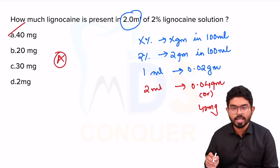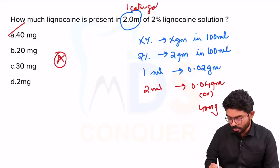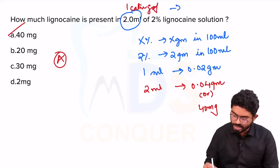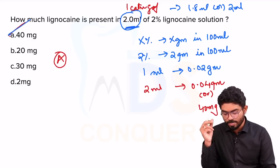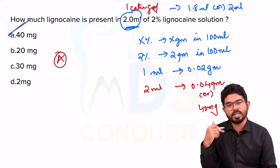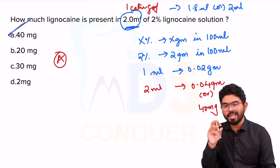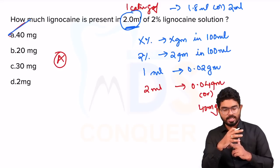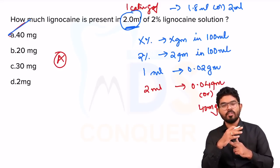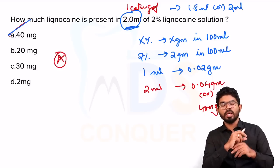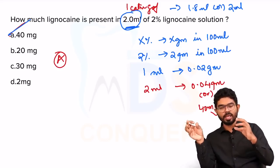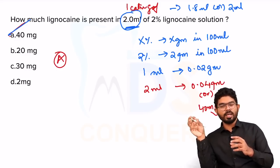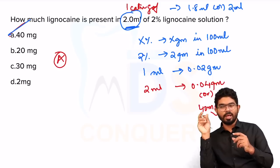Similarly, they can ask: how much lidocaine is present in 1 cartridge of 2% lidocaine? One cartridge contains either 1.8 ml or you can consider it as 2 ml based on the options. The answer is the same — how much lidocaine is present in 2 ml of 2% solution. X percentage means X grams in 100 ml; for 2 ml the answer is 40 mg.